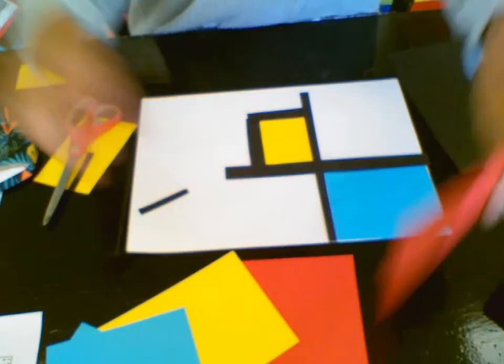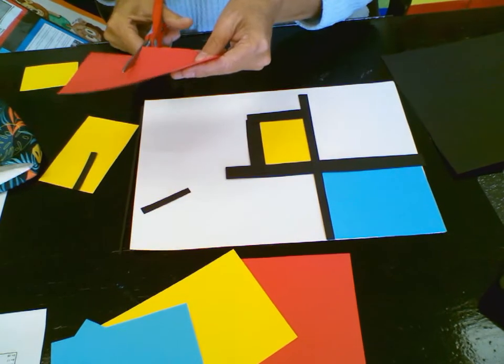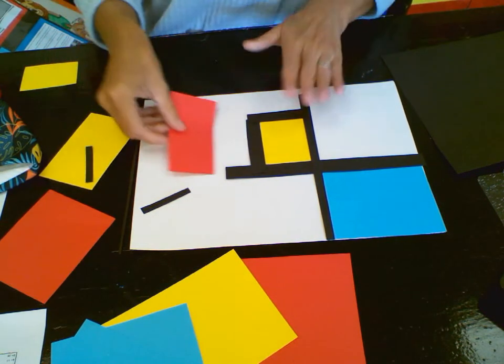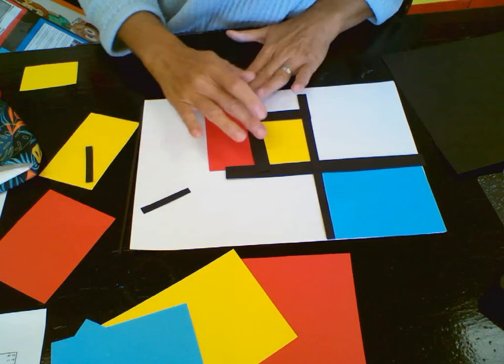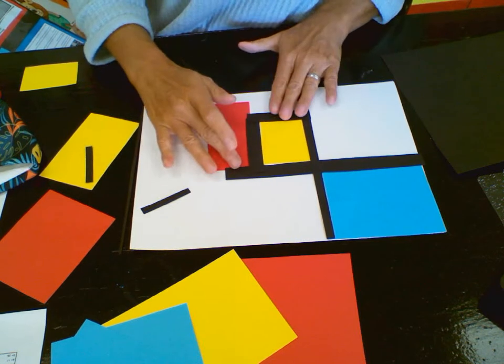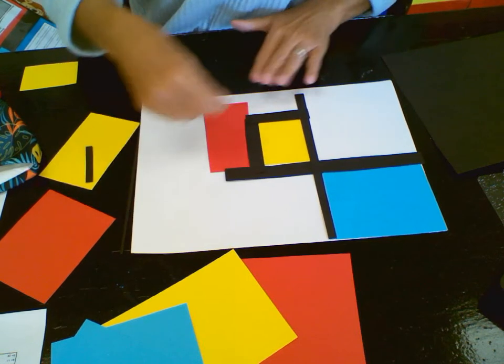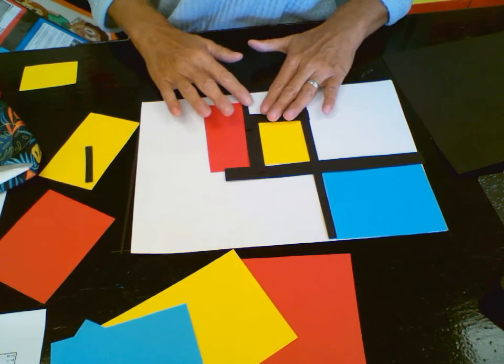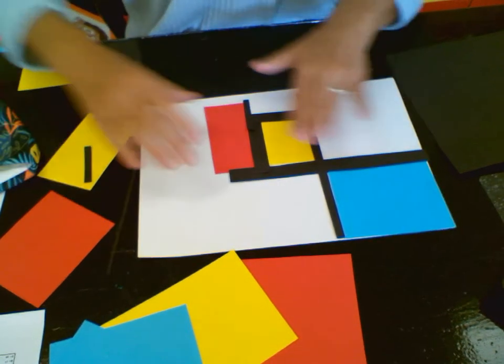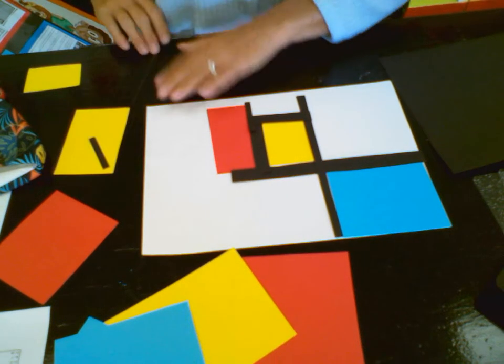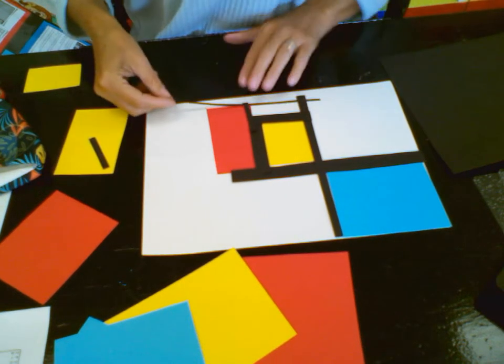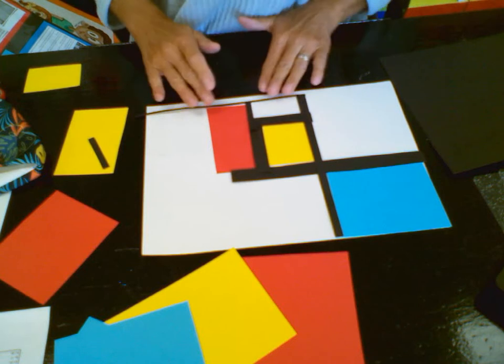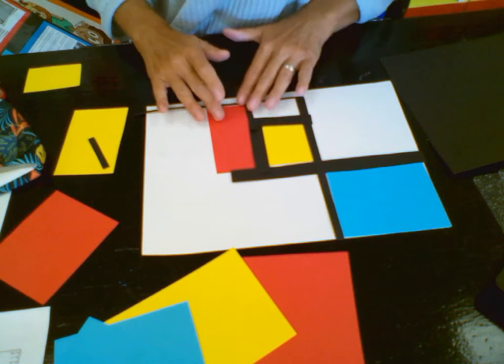Then perhaps I want to make an area for a red rectangle. I could lay it next to, or I could put it in another space altogether and use my different black strips to kind of corral them in or put them into spaces.